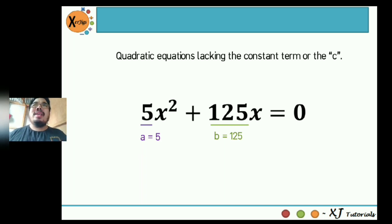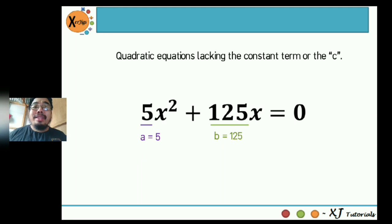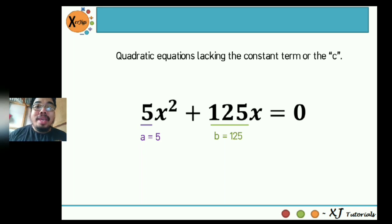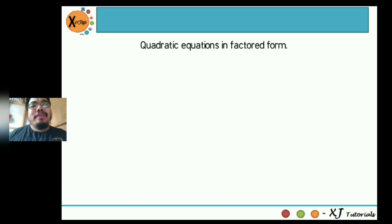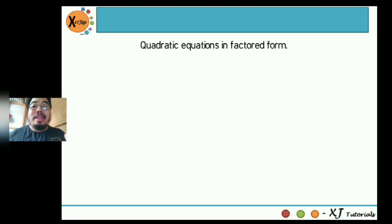At this point, I am very positive that whatever quadratic equations are given to you — whether in standard form, lacking the linear term, or lacking the constant term — you can now identify the values of a, b, and c. However, how about if you're given quadratic equations in factored form? For those who are new to quadratic equations, this might be very challenging, but you don't need to worry — I'm here to help you out.